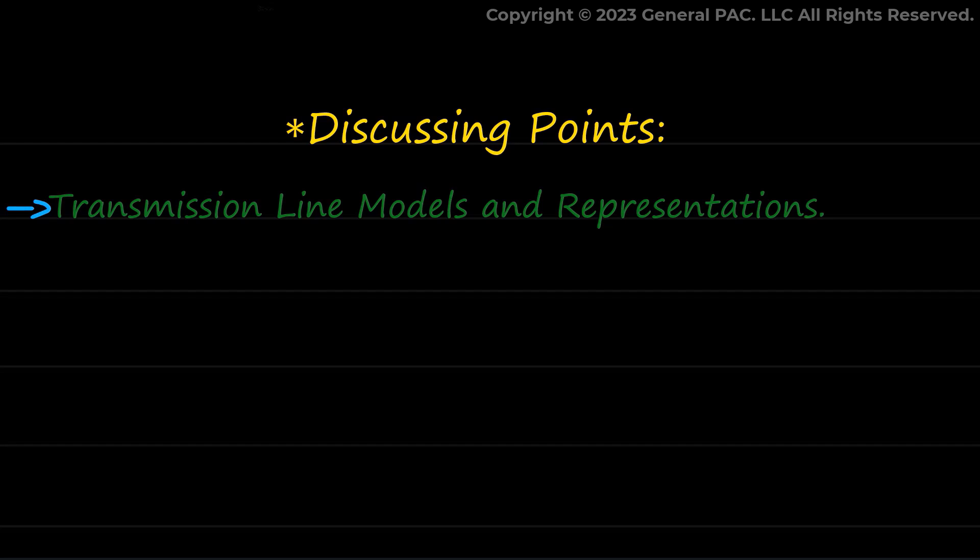In this part we will be discussing Transmission Line Models and Representations. Let's start by discussing the line constants and their effect on the power system, then we will describe how transmission lines can be modeled. Transmission lines have three important parameters or constants: Resistance, Inductance, and Capacitance.